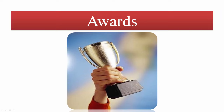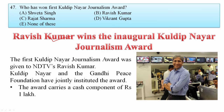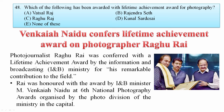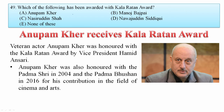Now let's see awards. Who won the first Kuldip Nayar Journalism Award? Ravish Kumar won the inaugural Kuldip Nayar Journalism Award. Kuldip Nayar was a veteran Indian journalist, syndicated columnist, human rights activist, author, and ex-High Commissioner of India to the UK, known for his long career as a left-wing political commentator. He was also nominated as MP in 1997. Your answer is B — Ravish Kumar. Venkaiah Naidu conferred a Lifetime Achievement Award for Photography on Raghu Rai. Your answer is C — Raghu Rai.